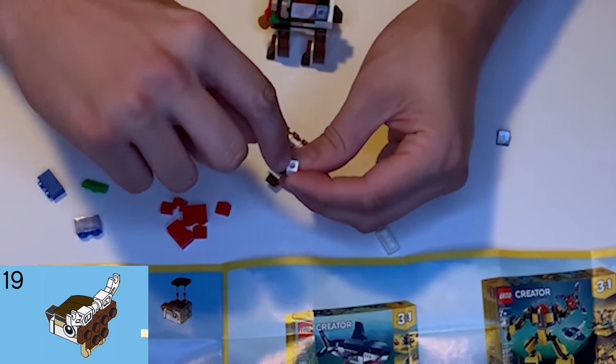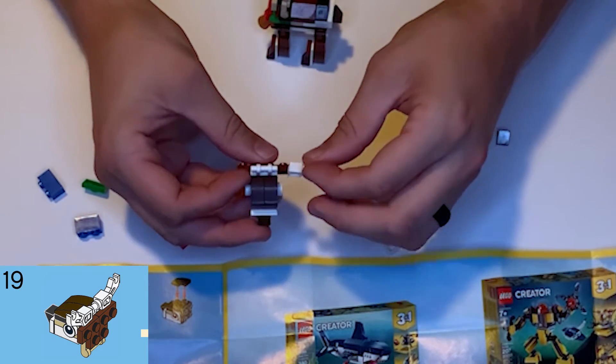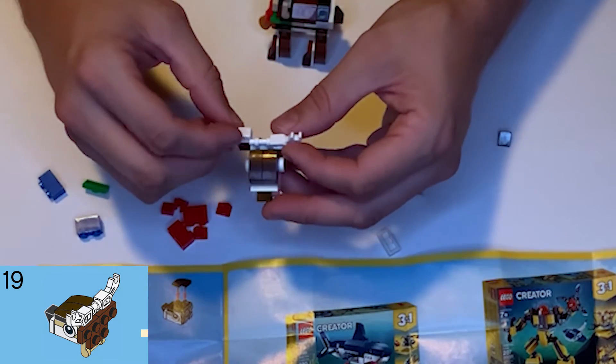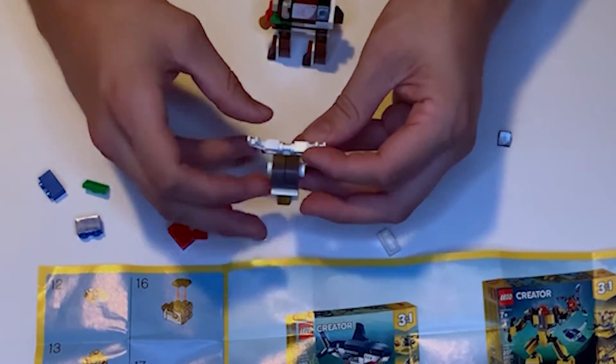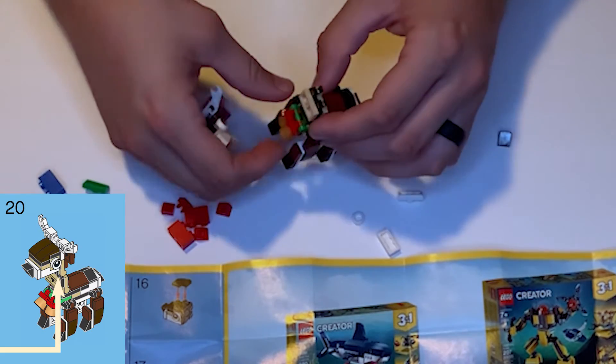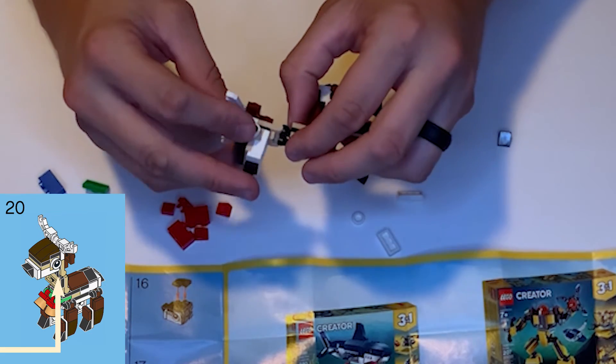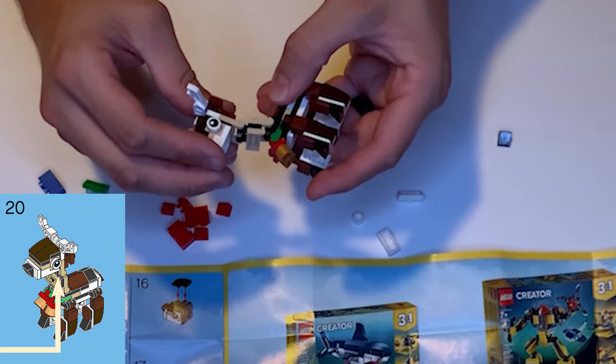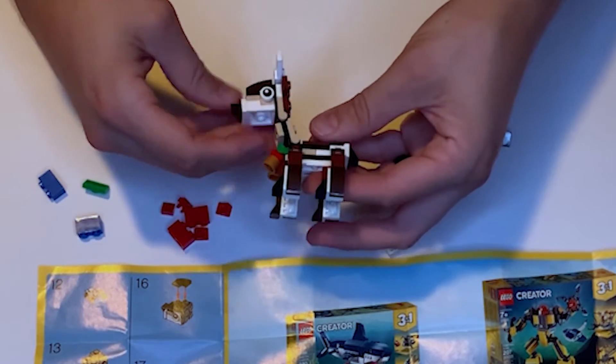They're going to go into this white bracket on either side, so our head is done. Step 20, we're going to attach the head to the neck, so this tan bracket is going to go into these little black hands and we have this movable neck. Little reindeer guy just about done.